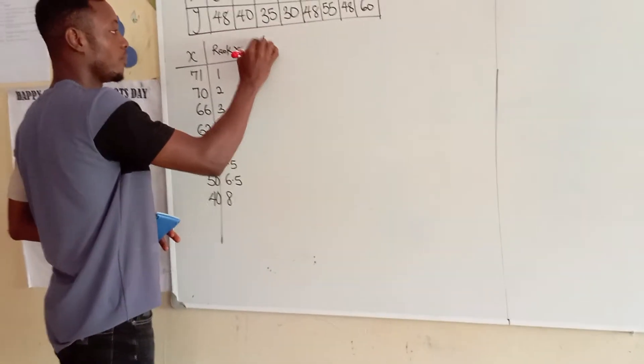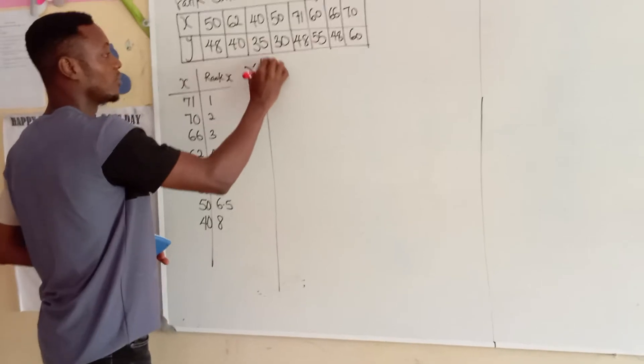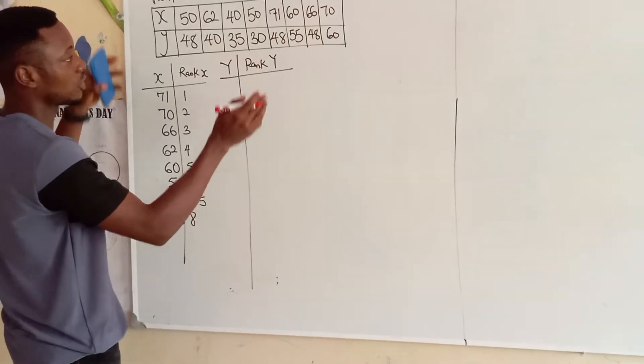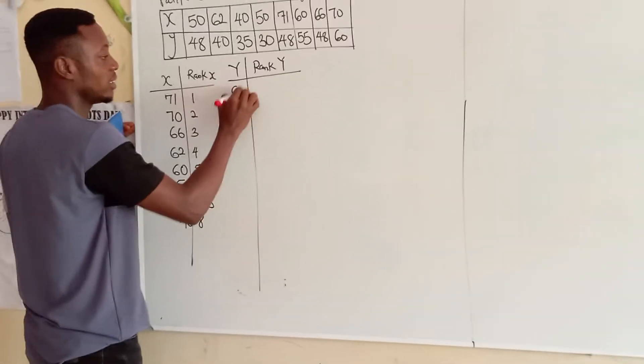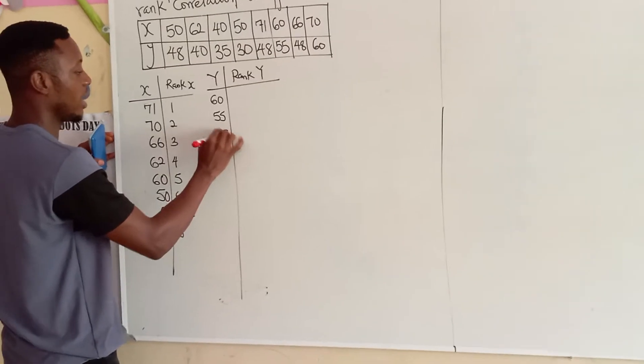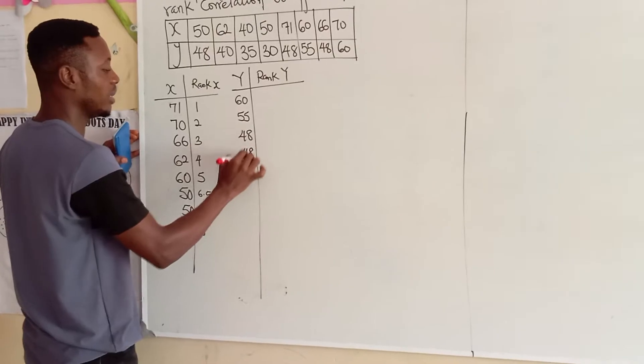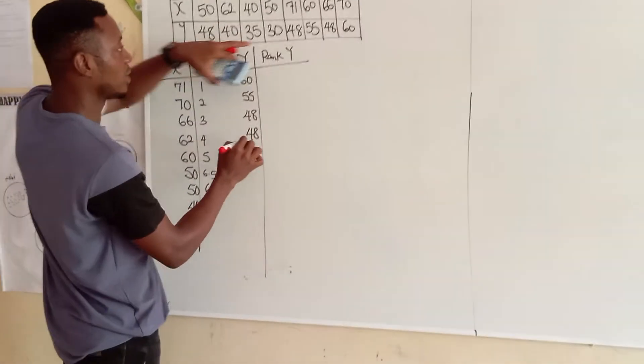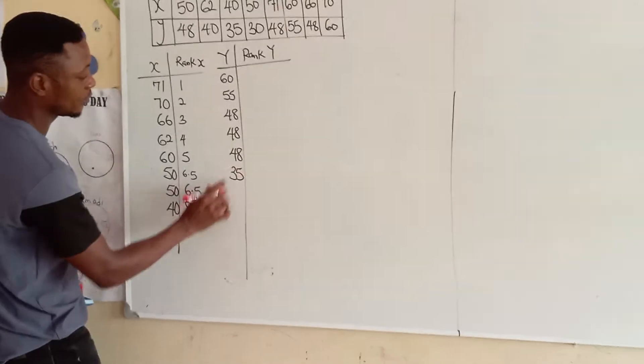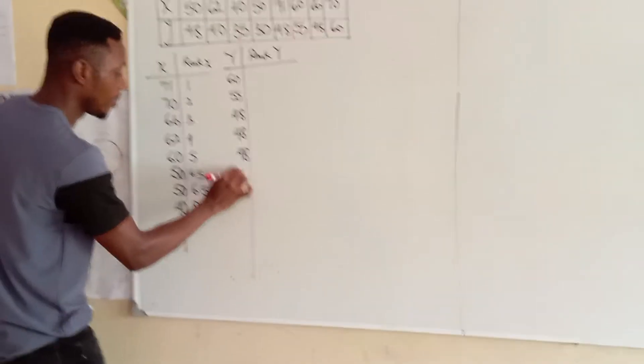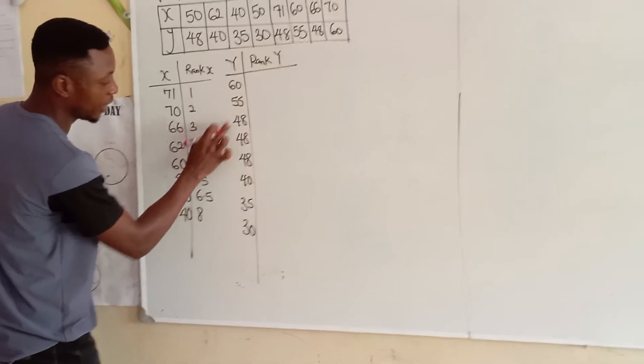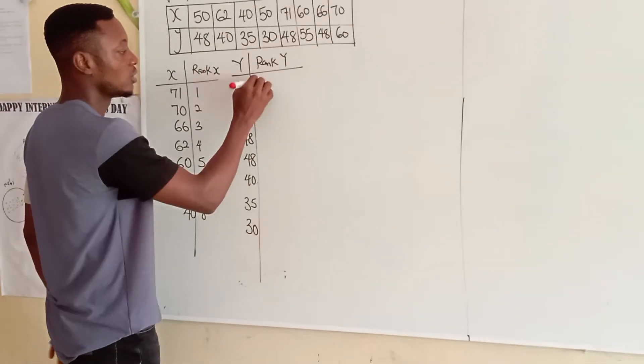Now, let's come over to Y, and then we have rank Y. Under Y, arrange also in descending order, the biggest is 60. After 60, we have 55. We have 48. 48 appears in three places. After 48, the next biggest is 35. We have 35. No, sorry, we have 40. We have 35, and we have 30. 1, 2, 3, 4, 5, 6, 7, 8. Correct.